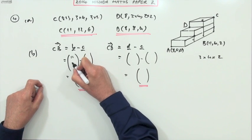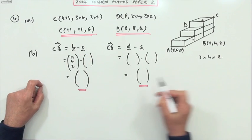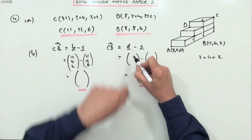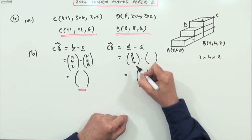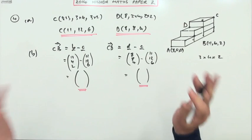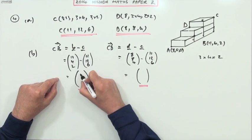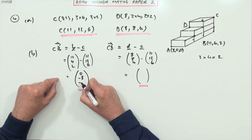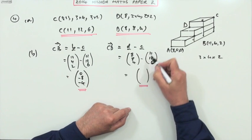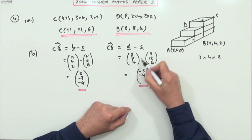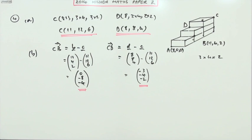So what have we got? B minus C, well B was (11, 4, 2) and C is (11, 12, 6). D is (8, 8, 4) and C is (11, 12, 6). Just numbers all over the place. 11 take away 11 is 0, 4 take away 12 is -8, 2 take away 6 is -4. 8 take away 11 is -3, 8 take away 12 is -4, 4 take away 6 is -2. They're all negatives! Well there you go, those are the two vectors.